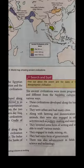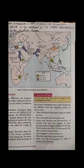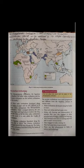Here is a Search and Surf activity given. Let's explore what is given here: find out about the extent and the date of Mesopotamian Civilization. The Mesopotamian Civilization dated 5,900 to 3,500 BCE was in the eastern Mediterranean, bounded in the northeast by the Zagros mountains and in the southeast by the Arabian plateau.